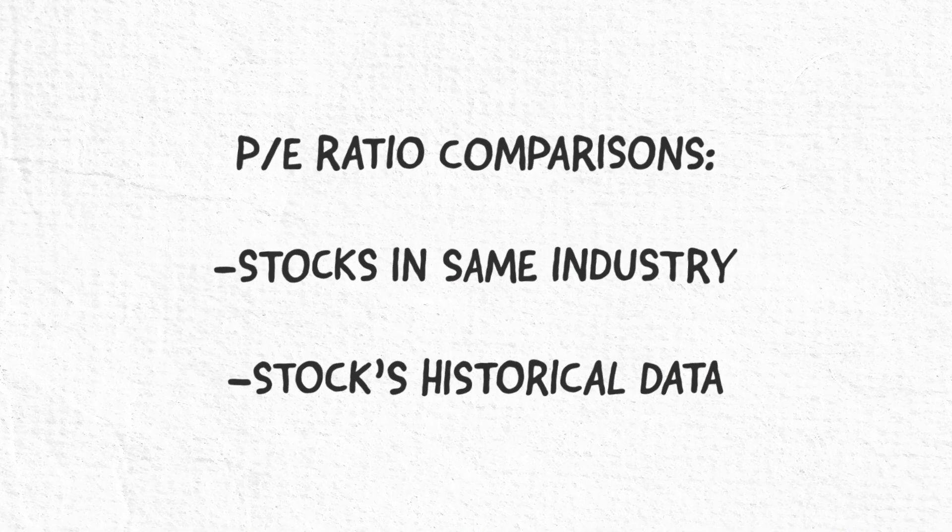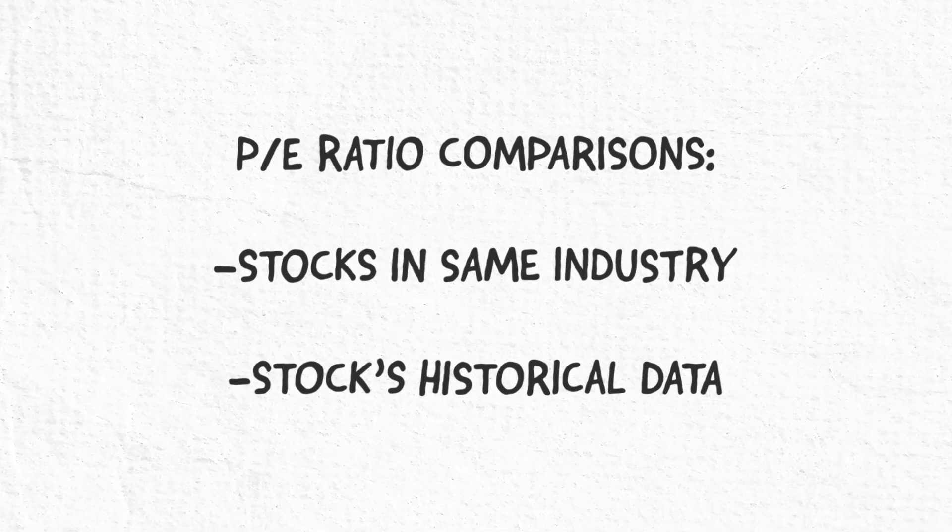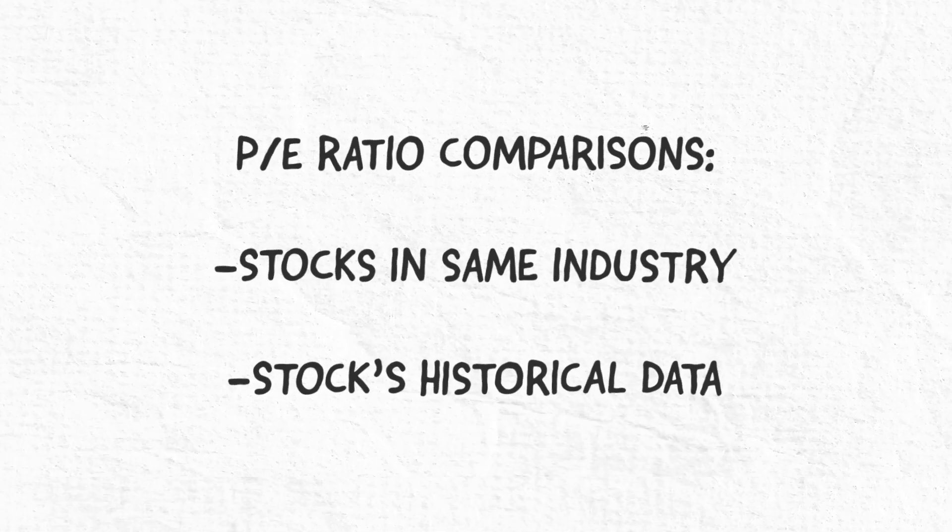Investors typically compare different P/E ratios: one stock with others in the same industry, one stock with its own historical average ratio, one industry with another industry, or the whole market compared with the market's historical average ratio. Investors typically look for stocks with lower P/E ratios, as this may indicate an undervalued opportunity.